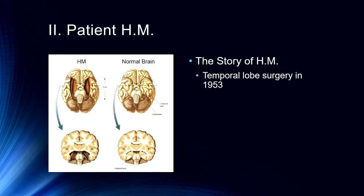What happened to H.M. is that he had a severe form of epilepsy. As I recall, part of the story is that he had a bicycle accident as a child that started this form of epilepsy. In the 1950s, we didn't know a lot about the brain or how it functioned. So he underwent a pretty radical neurosurgery in which they removed significant portions of his medial temporal lobes and almost all of his left and right hippocampi.